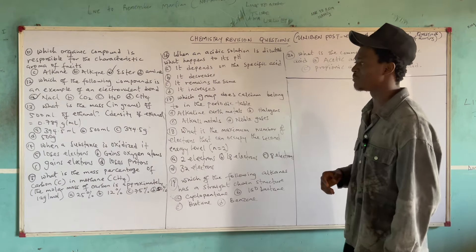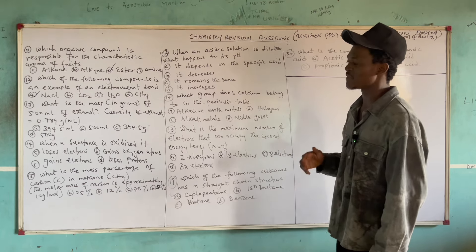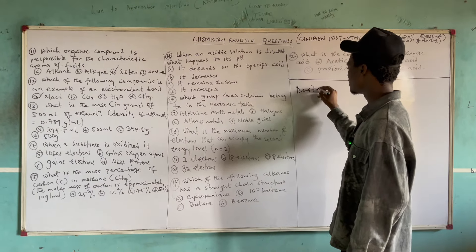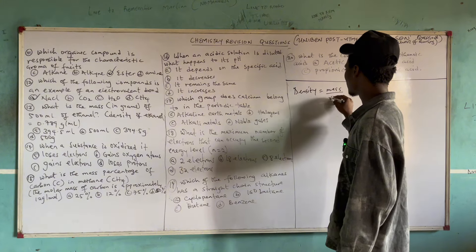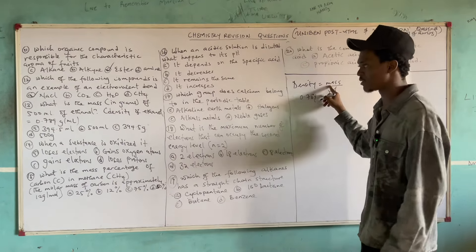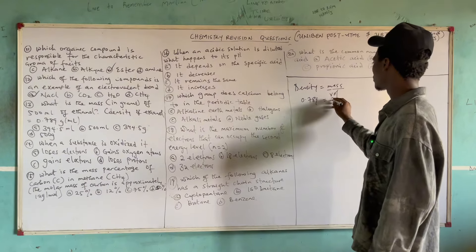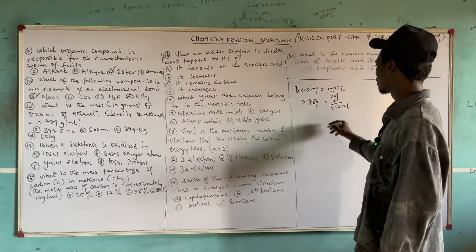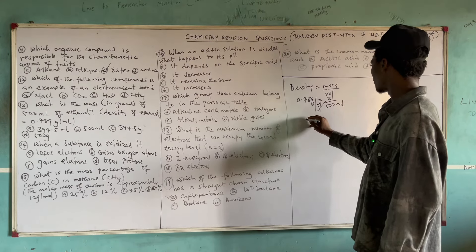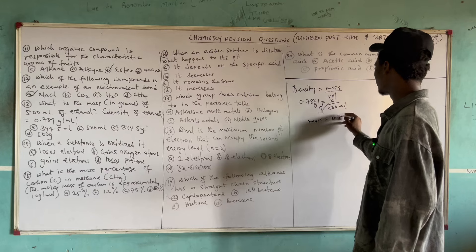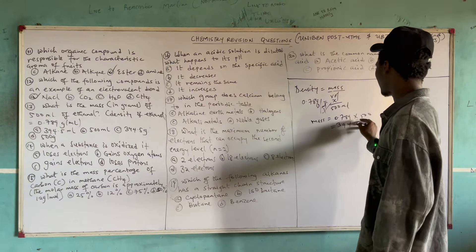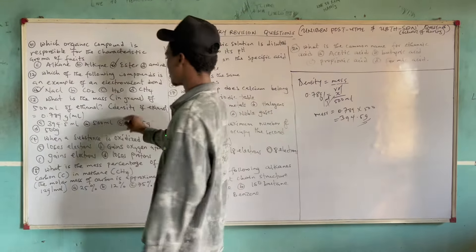Question 13: What is the mass in grams of 500 mL of ethanol, given that the density of ethanol is 0.789 g/mL? Using the formula: density = mass/volume, so mass = density × volume = 0.789 × 500 = 394.5 grams. The correct answer is option C, 394.5 g.